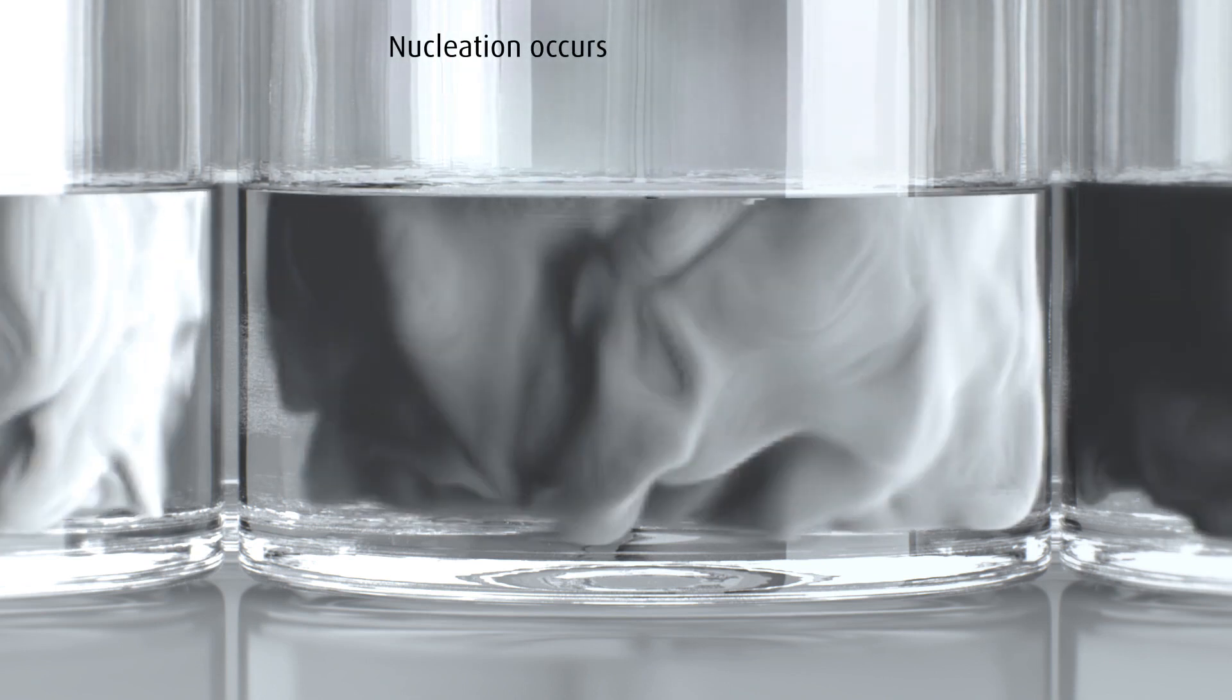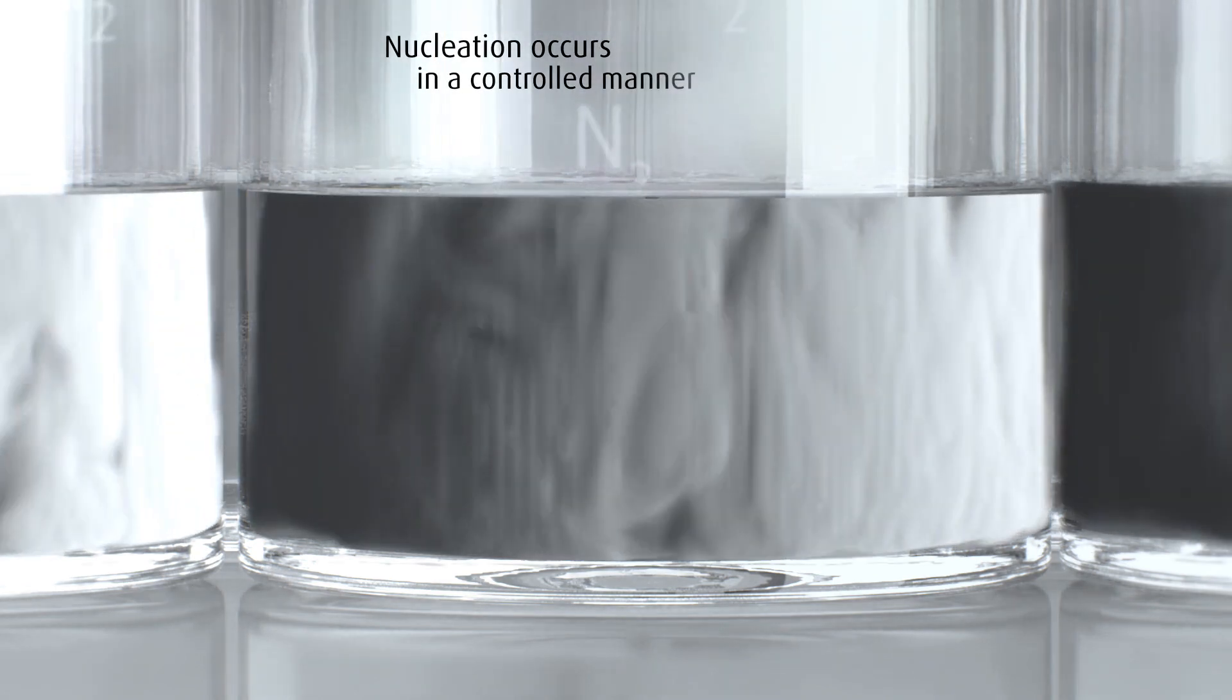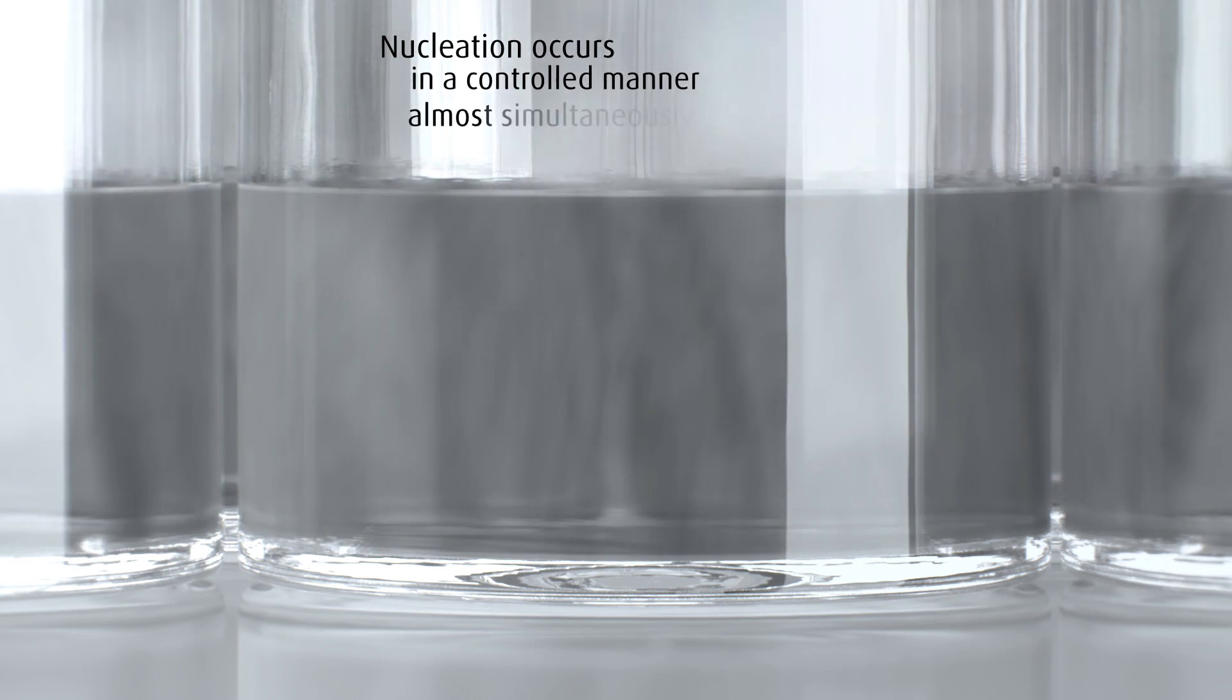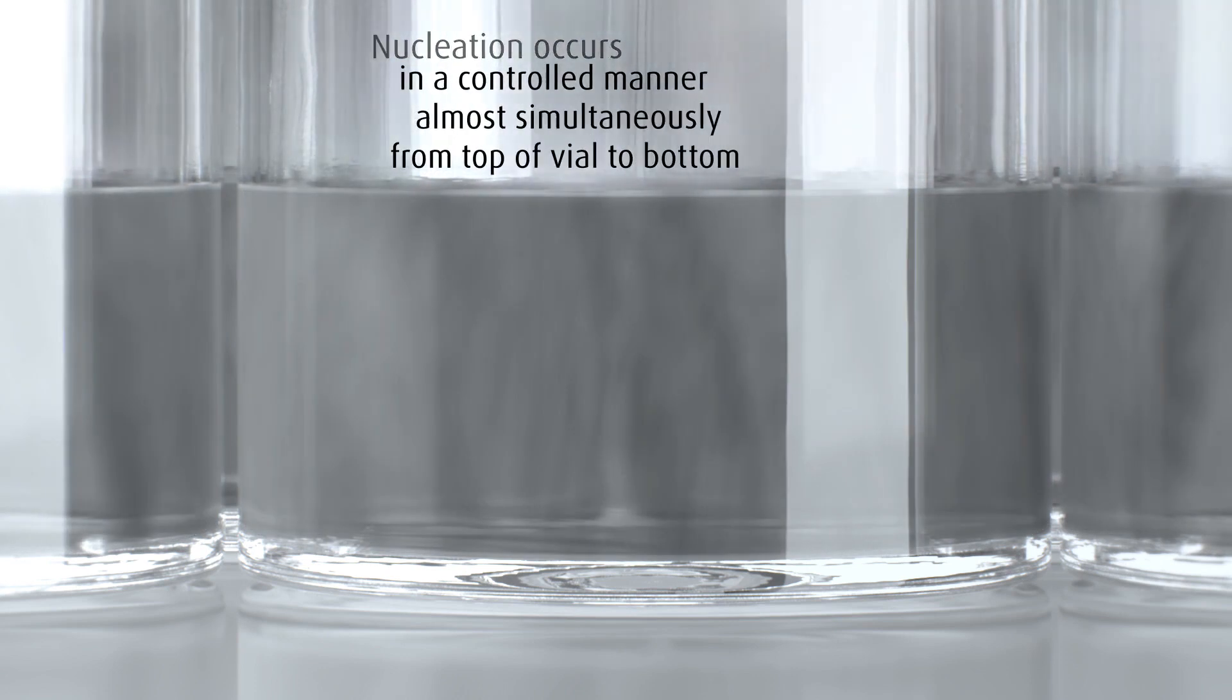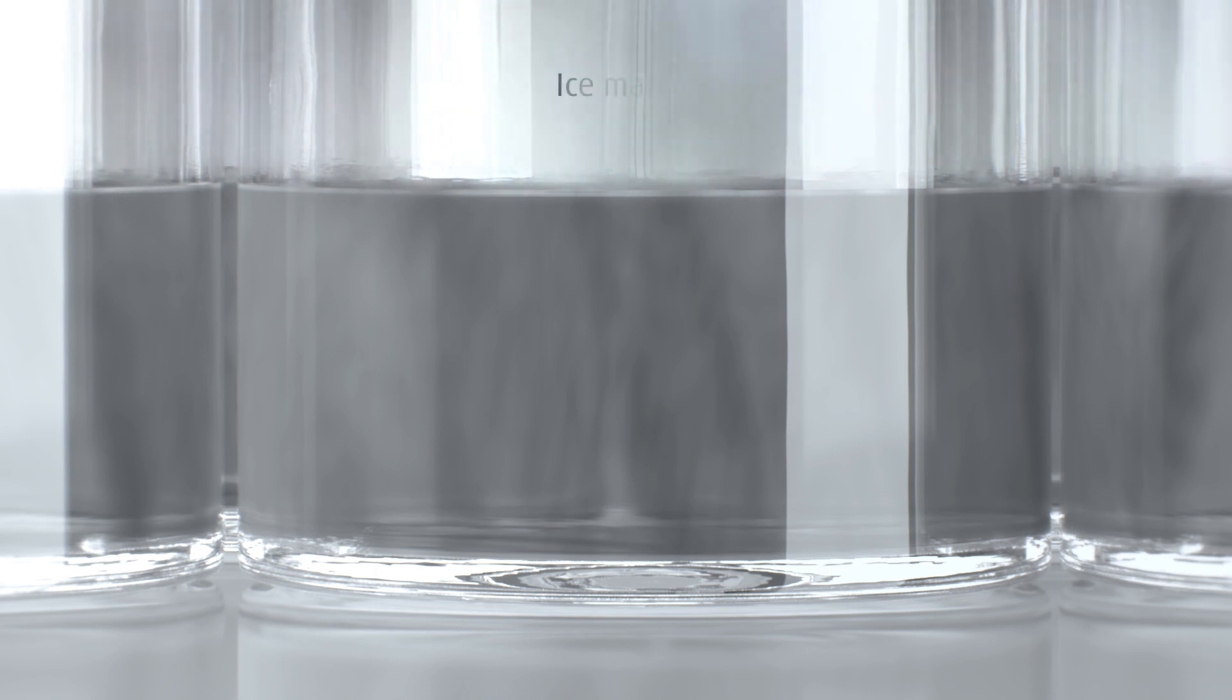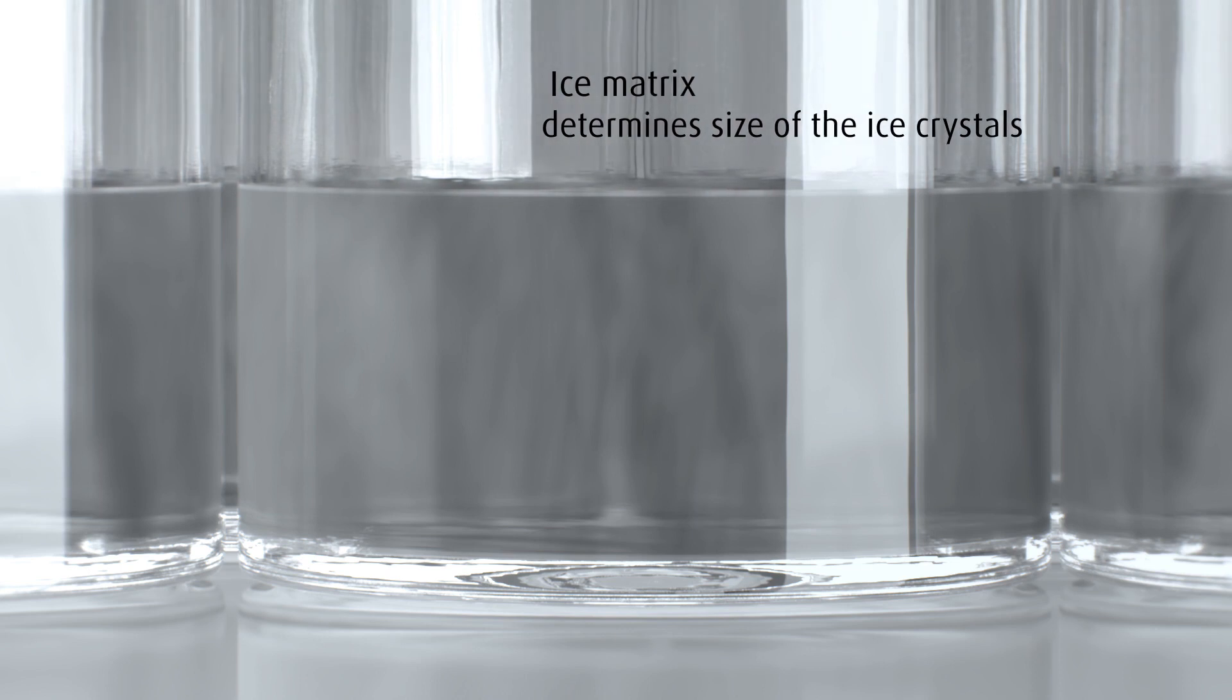Nucleation occurs in a controlled manner almost simultaneously across the vials and from the top of the vial to the bottom, forming the initial ice matrix which determines the size of ice crystals in the product.